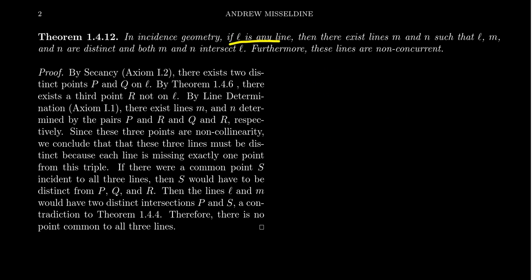If L is any line, then there exist lines M and N such that L, M and N don't have the same intersection. That is, they're non-concurrent. So basically the picture we're trying to find is the following: if you have a line L, there's going to be other lines that form something like this, that they're not concurrent to it. And this is finally where secancy is going to come into play.